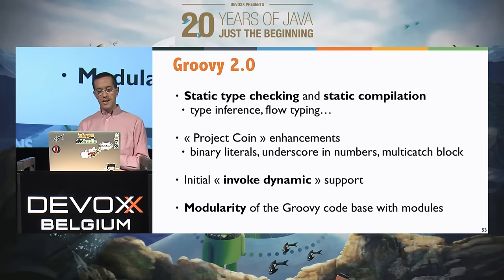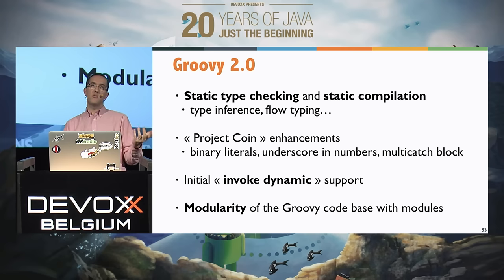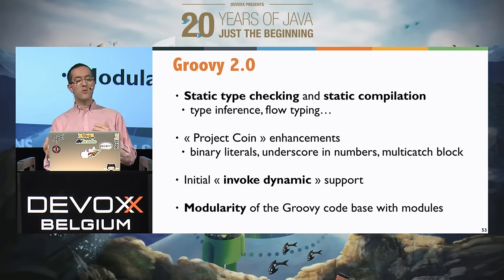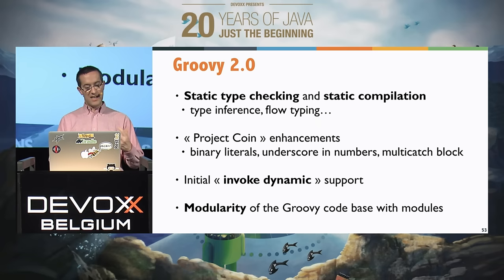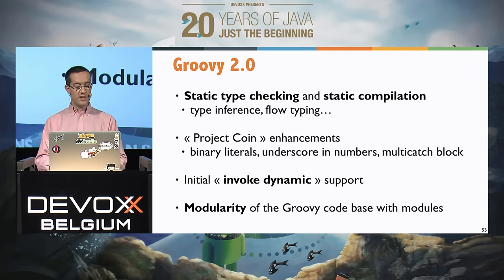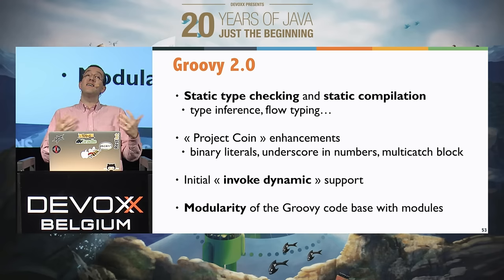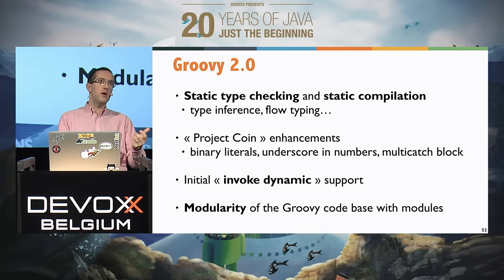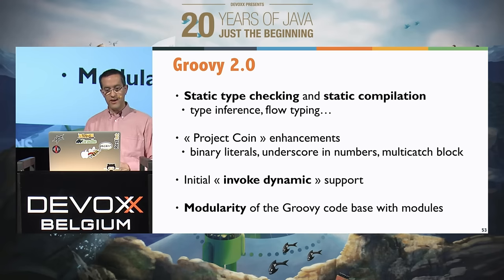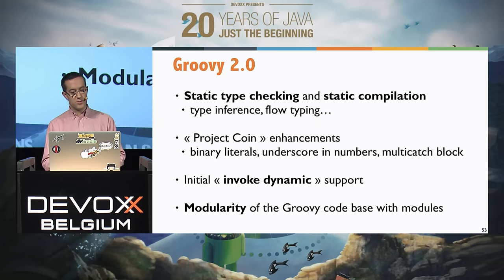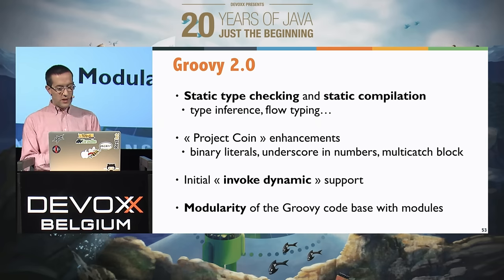We also introduced InvokeDynamic support to make Groovy pretty much as fast as Java even in dynamic mode. If you use the static compilation feature, it's just as fast as Java. With InvokeDynamic, the old assumption that a dynamic language must be slower than a statically compiled language is no longer really true. If there are still hotspots where it's slower, you can use static compilation. We also modularized Groovy a little bit.